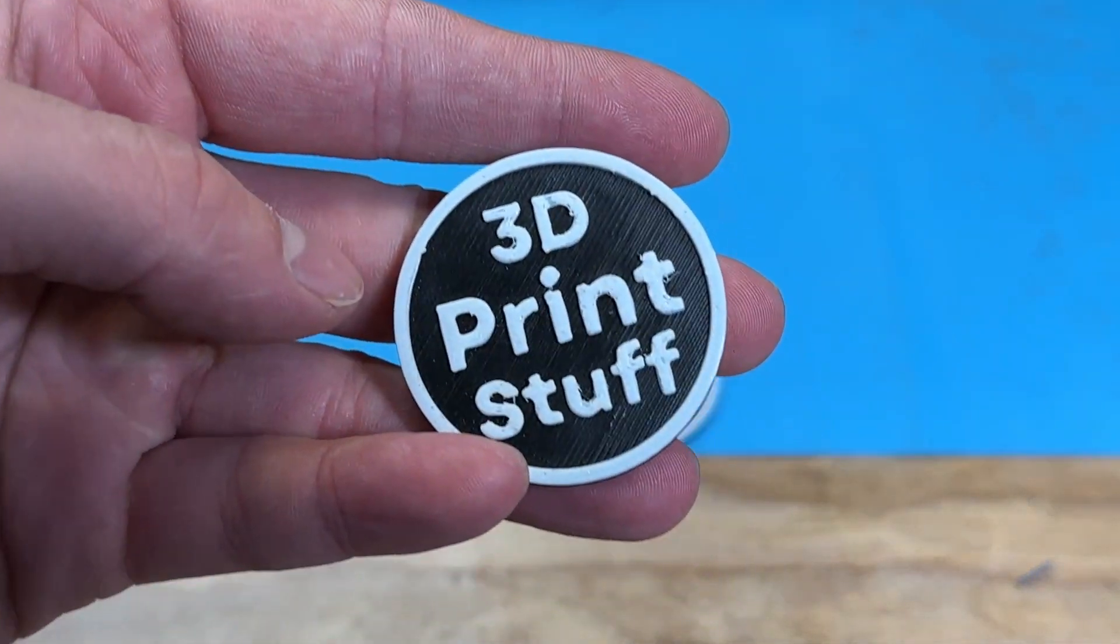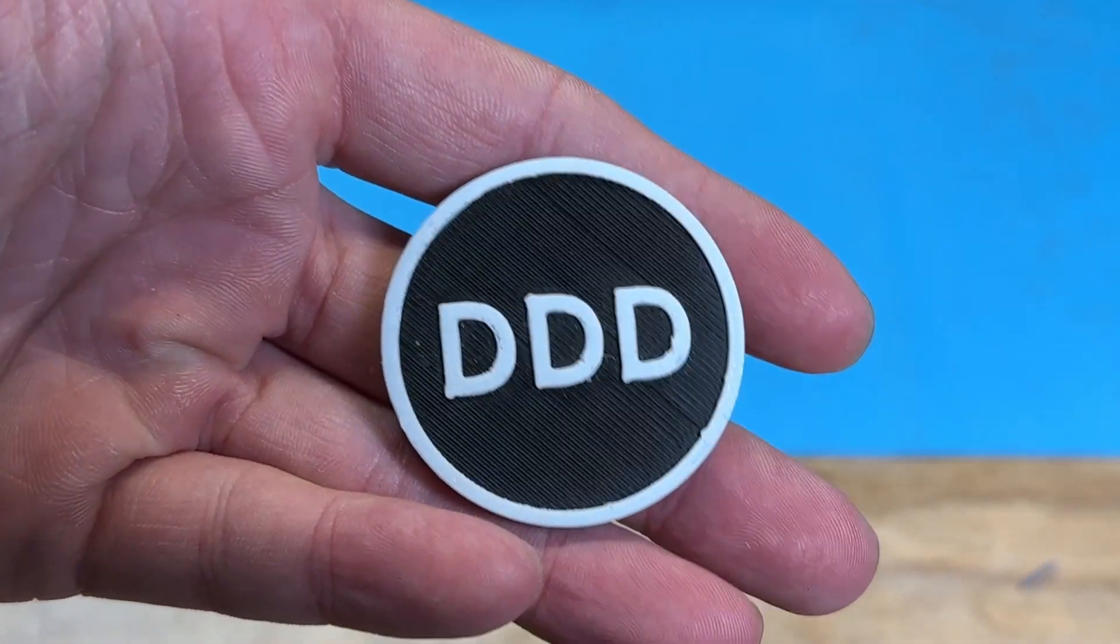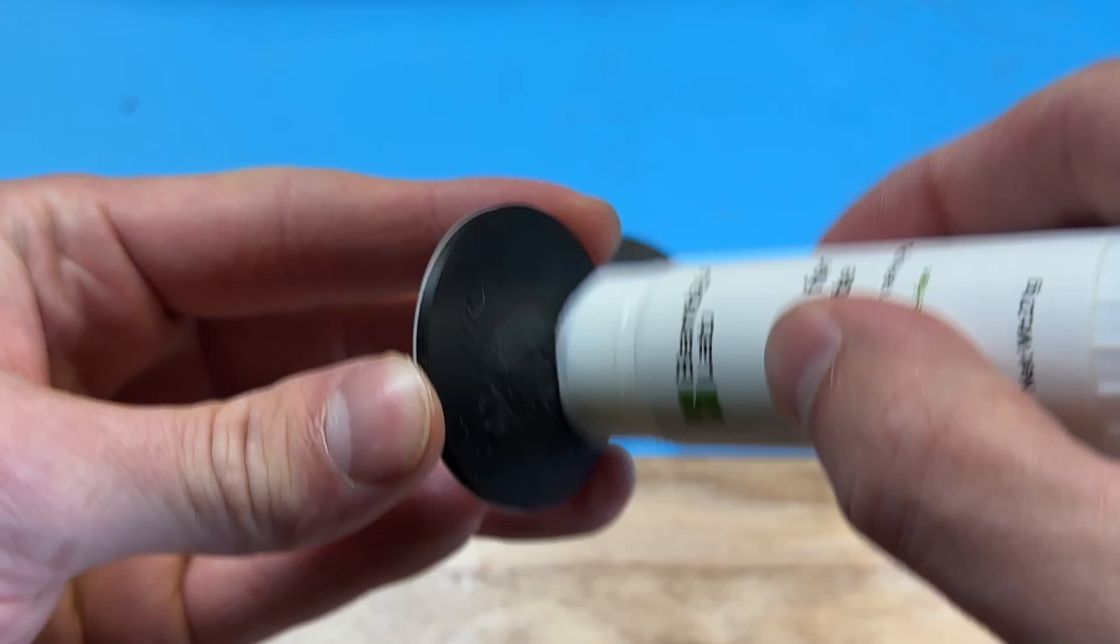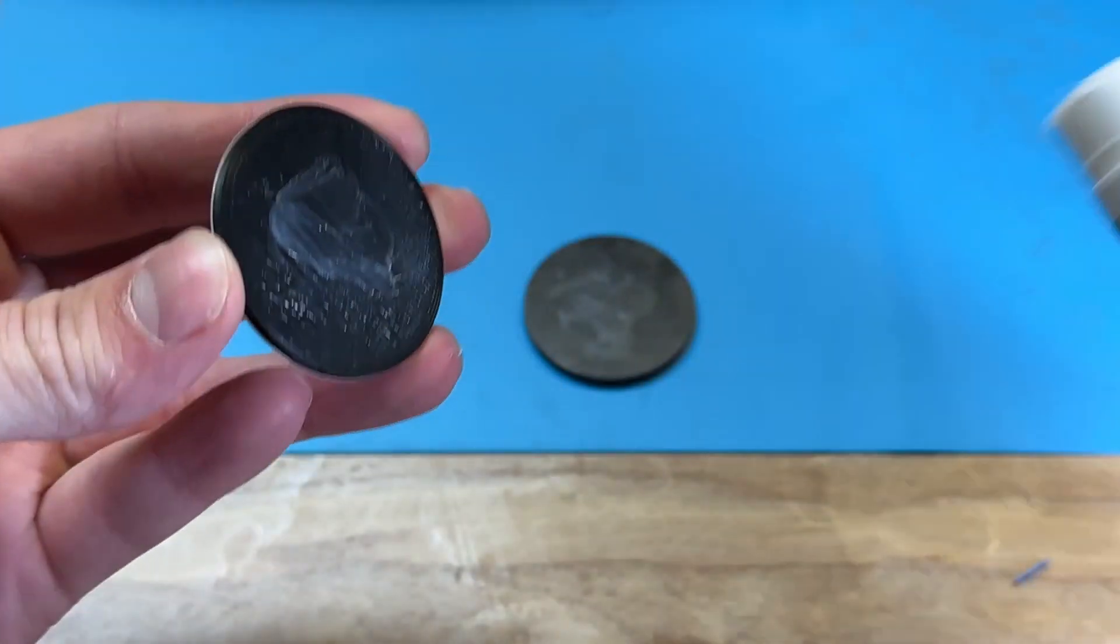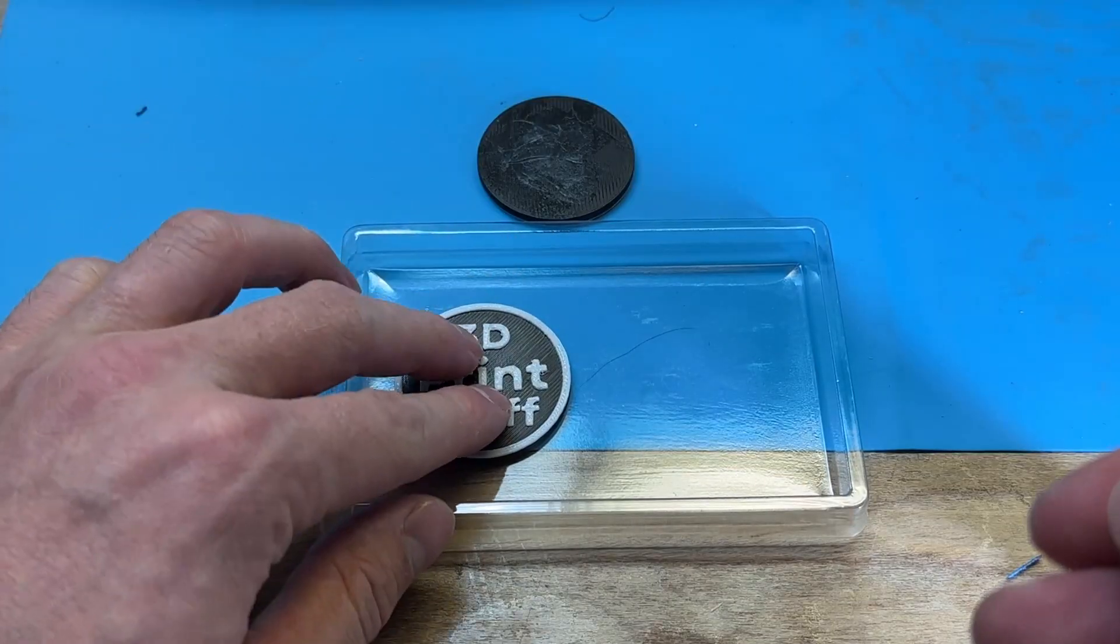I'm going to use these 3D print stuff and 3D pun coins. I figure that something that's thin is going to give me the best chance at success. I used a glue stick to stick the coins to the bottom of this recycled piece of plastic that I found.